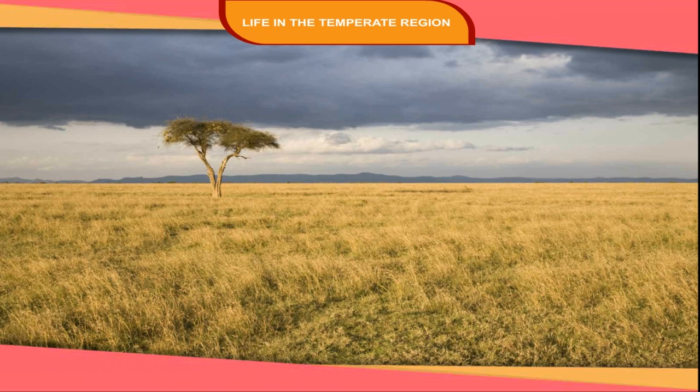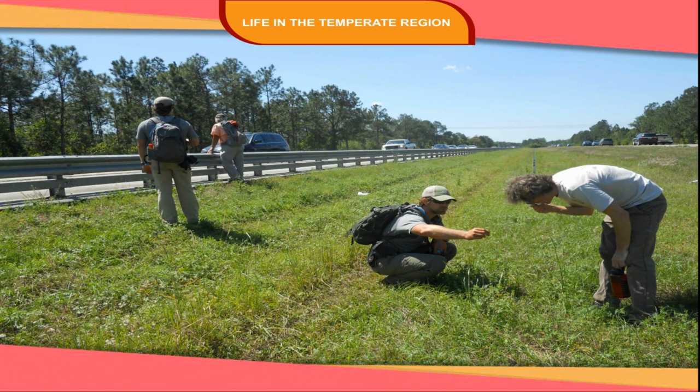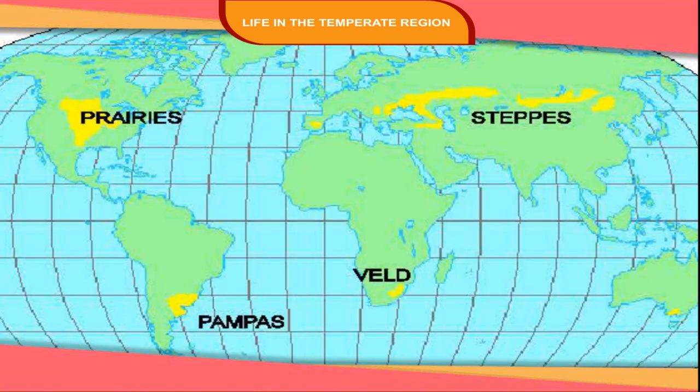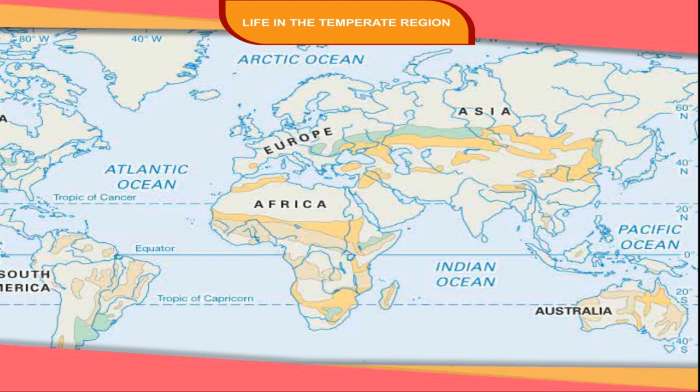These grasslands provide good pastures. The fertile soil and flat land can also support a variety of crops. The temperate grasslands of the world are known with specific names like prairies in North America, steppes in Russia, velds in South Africa, pampas in South America, and downs in Australia.